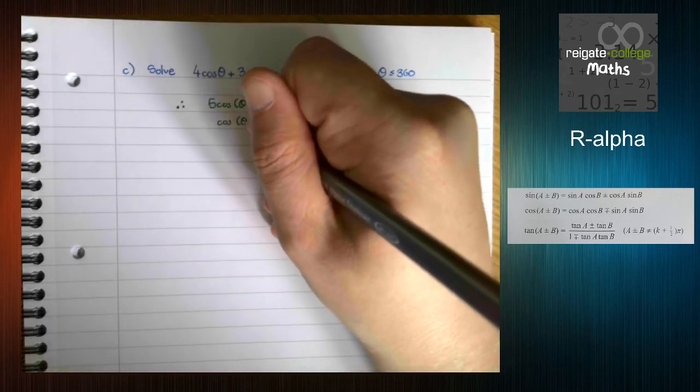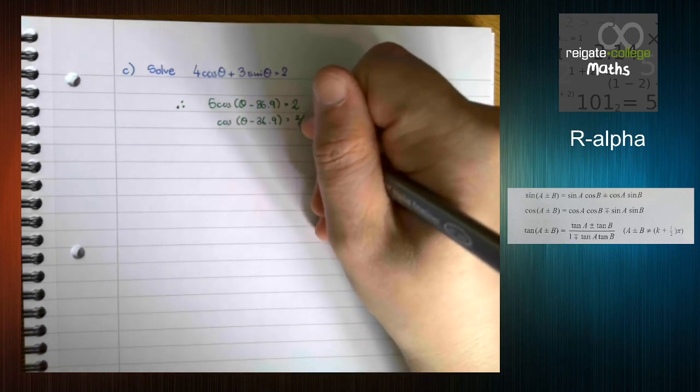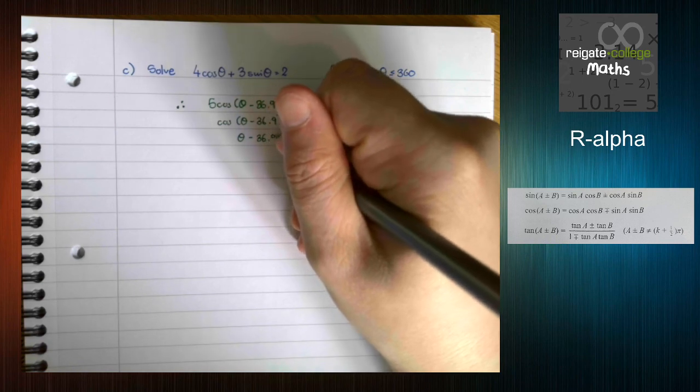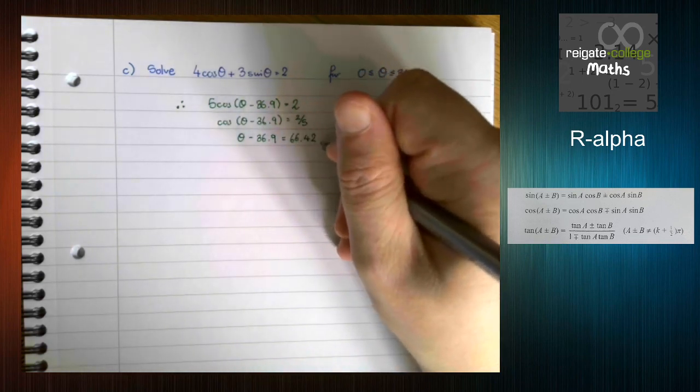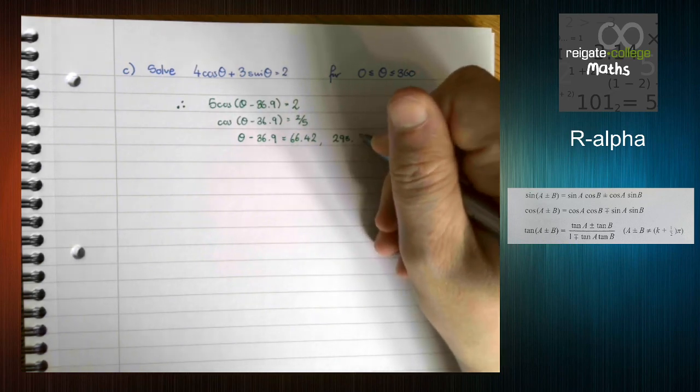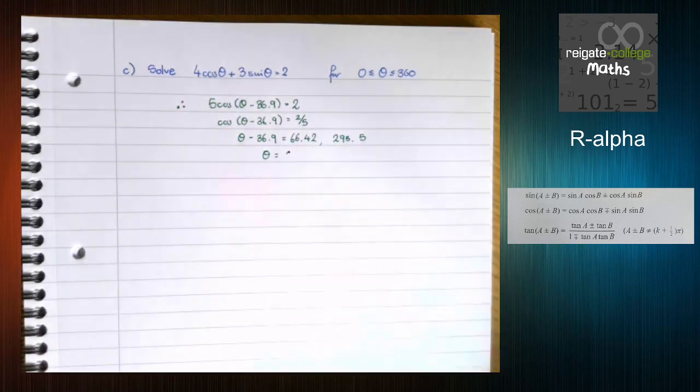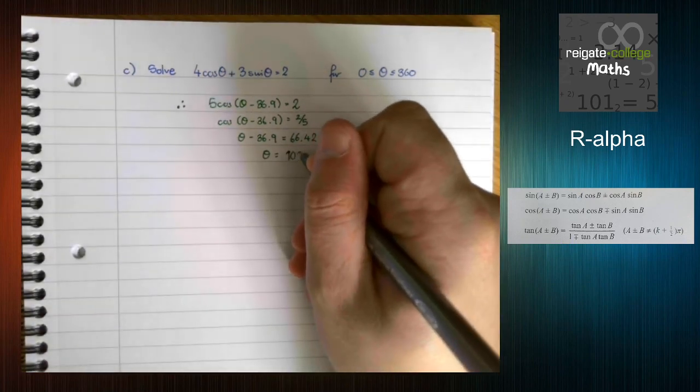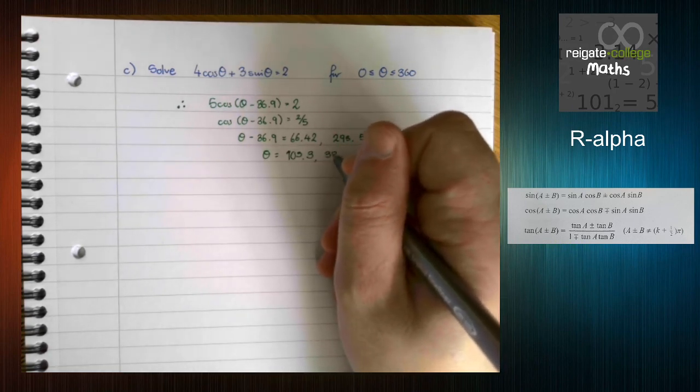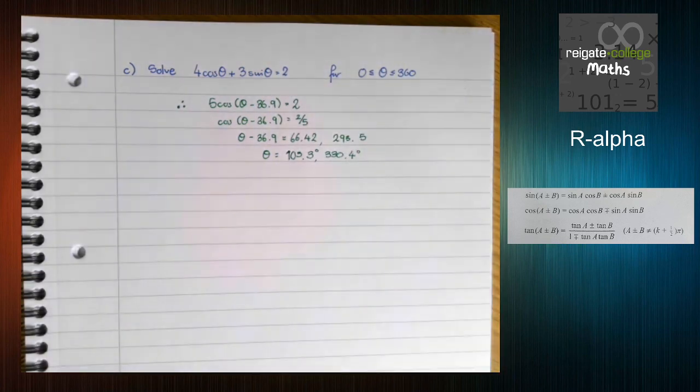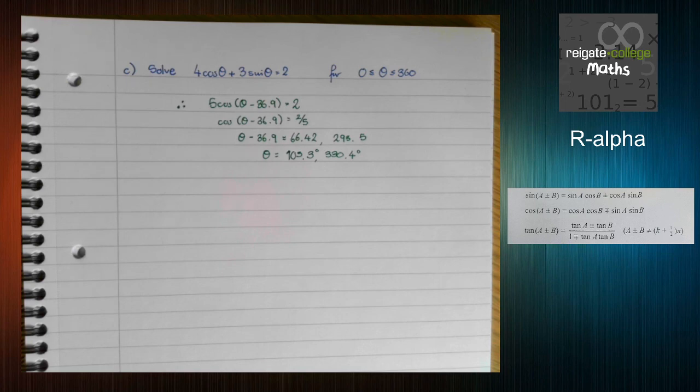Once we're here, it's just a case of solving the basic trig equation, like we've always done. Stick it in your calculator, working out secondary values, and then rearranging to make it fit. So 103.3 and 330.4 degrees. And that's it. Again, it's a case of using a trig identity to simplify an expression that we can then use to solve. In the next video, what we will look at is using this to model a situation using mathematical equations. But thank you for watching.